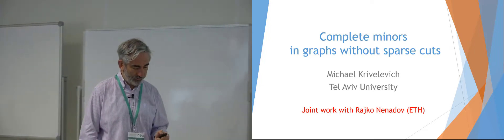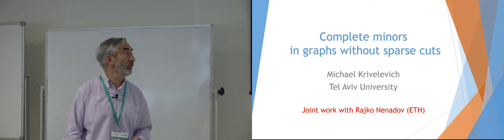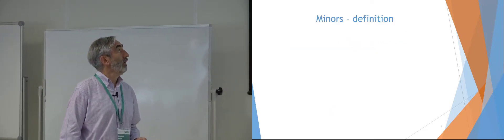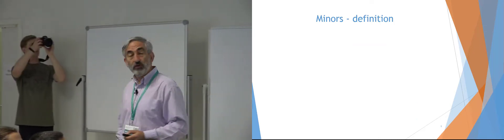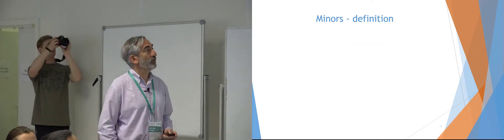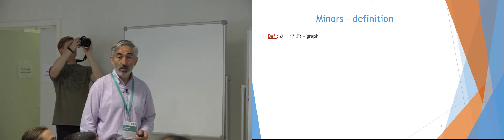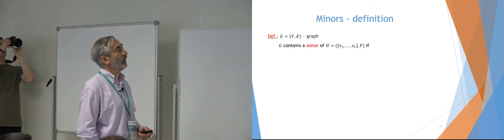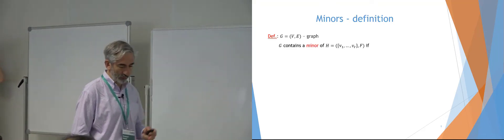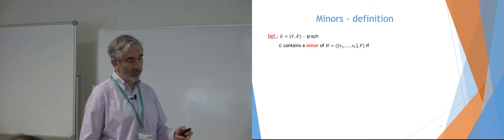If you have any questions, please feel free to interrupt me and to ask. Let me start with the most basic definitions. Let's start with the definition of a minor. Suppose we have a host graph G, which will host our minor, and suppose we have graph H, which we would like to embed as a minor.